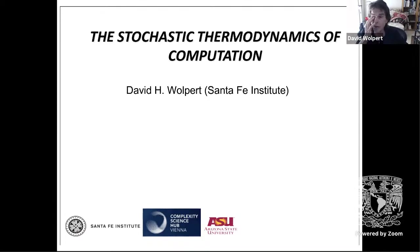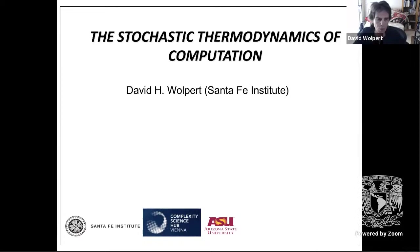We did not have the tools to talk about the thermodynamics of such systems until, in the past couple of decades, there has been essentially a revolution in non-equilibrium statistical physics. One part of it is called stochastic thermodynamics, which has now provided us tools for analyzing the thermodynamic properties of arbitrarily far-off-equilibrium evolving systems, and therefore provides us the tools to — for the first time — really start to analyze what's going on in information processing or computation more generally.